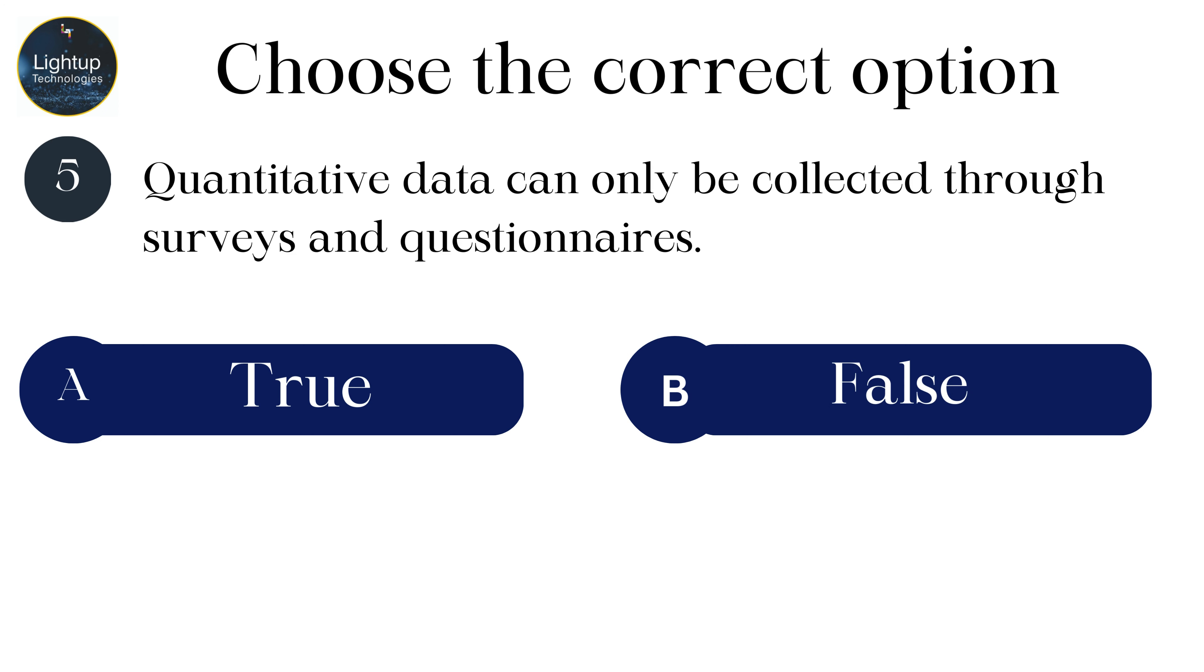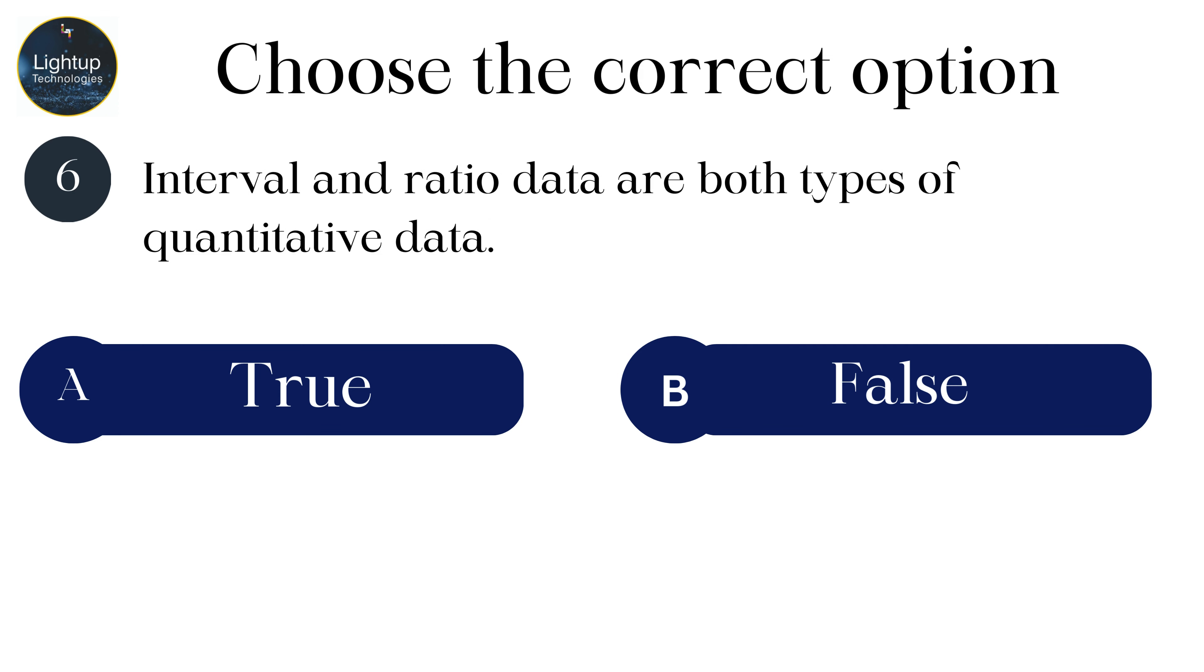Quantitative data can only be collected through surveys and questionnaires. Interval and ratio data are both types of quantitative data.